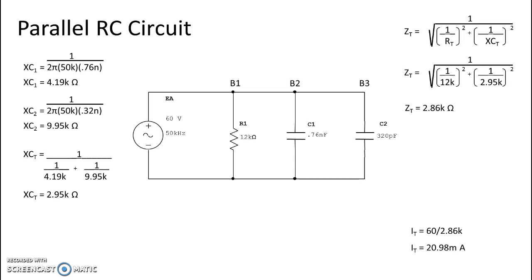Now we're going to look at the individual branches and the current in those branches. In branch one we have just the resistor, so we take the voltage divided by the resistor's ohmic value which is 12k, and we get a current of 5 milliamps.